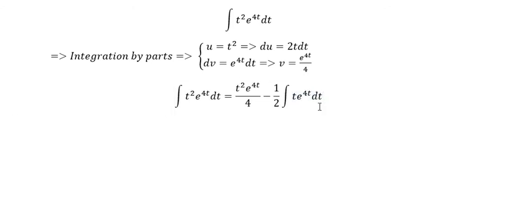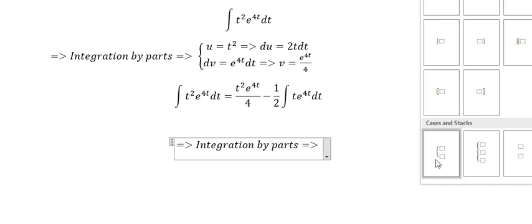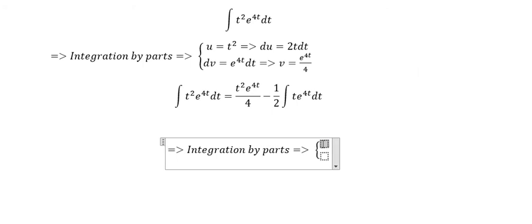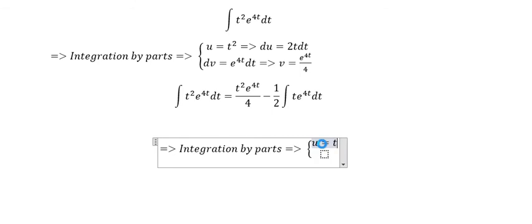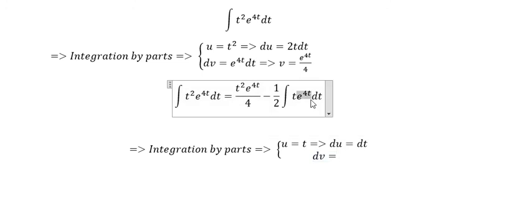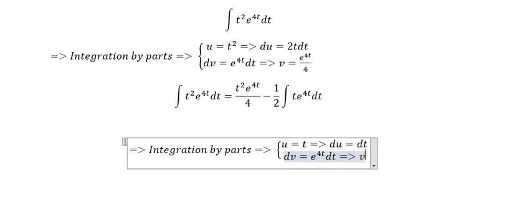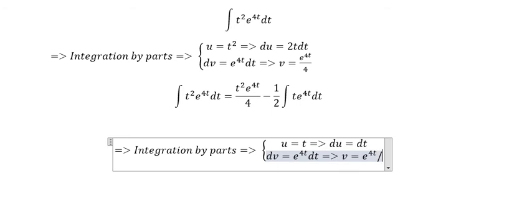For the next one, we still use the same technique. We apply integration by parts again: u is t, and dv is e to the power 4t dt, so v is e to the power 4t divided by 4.